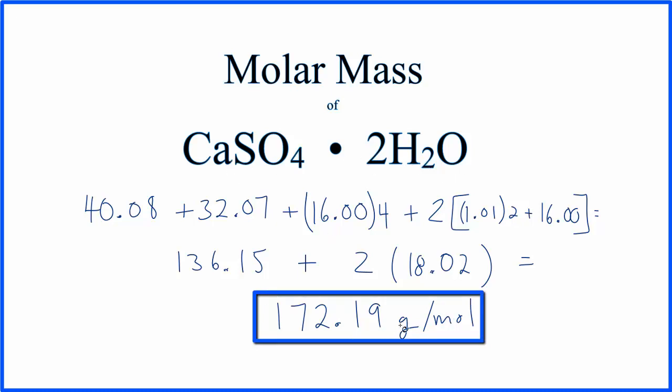Do note that you may have a slightly different answer after the decimal point. My periodic table rounded to two decimal places. This is Dr. B with the molar mass for calcium sulfate dihydrate. Thanks for watching.